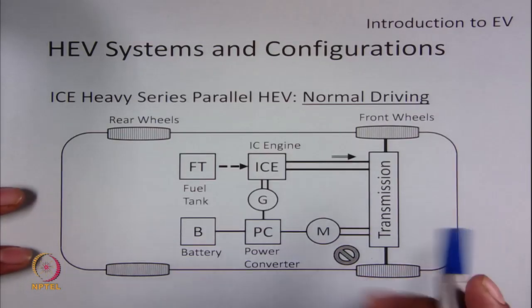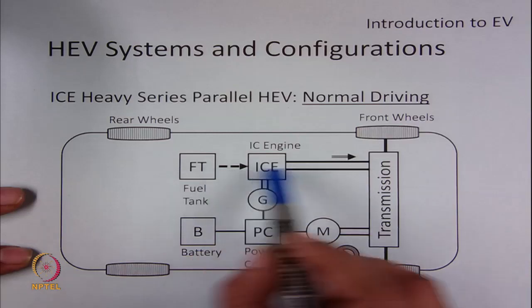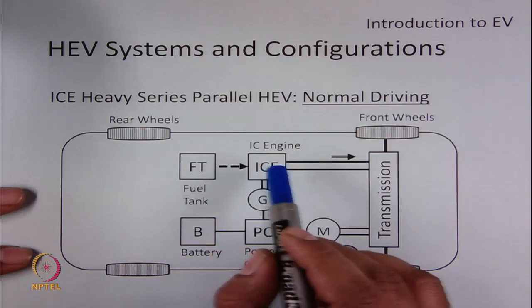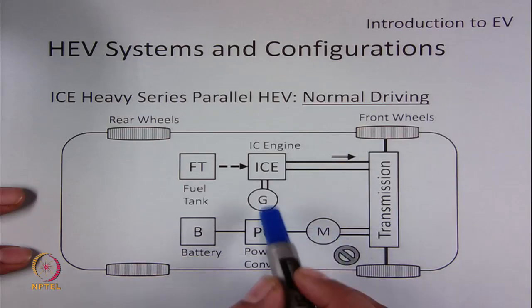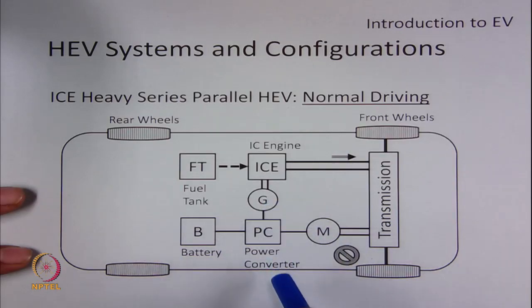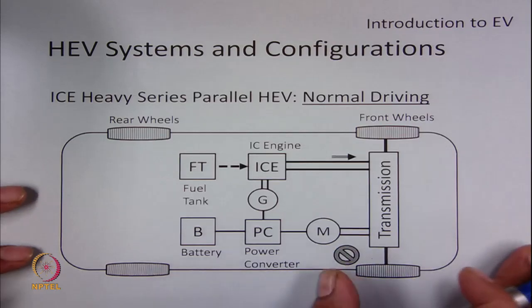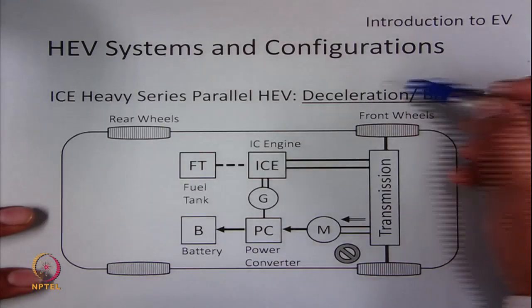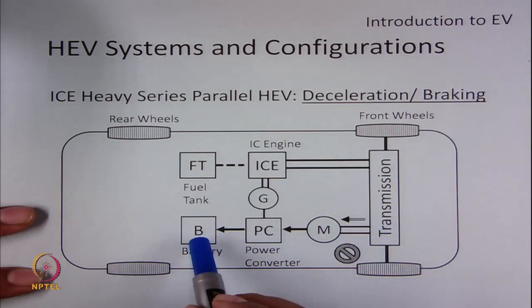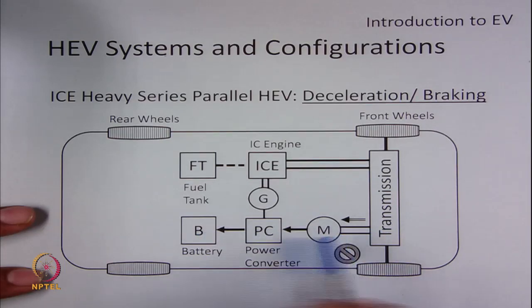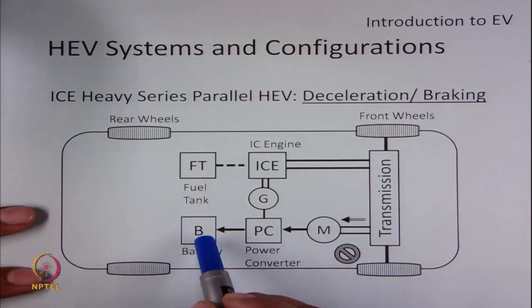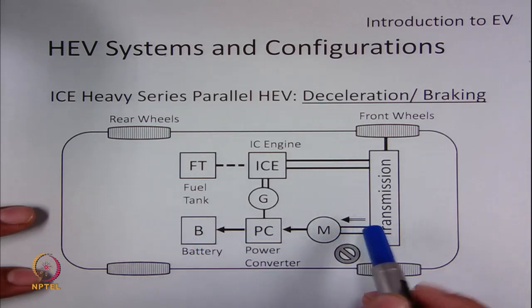During normal driving in the IC engine-heavy series-parallel HEV, only the IC engine-based drive train is active; mechanical energy is transferred from the IC engine to the transmission, and the electrical drive train and generator are turned off. During deceleration or braking, only the electrical drive train is active; the mechanical energy of the wheels is extracted by the motor operating as a generator, and the battery is charged by the energy recovered from the wheels.